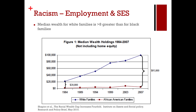As a result, the median wealth for white families is more than eight times greater than for Black families. Looking at wealth increase not including home equity between 1984 and 2007, it has gone up dramatically for white families compared to African American families.